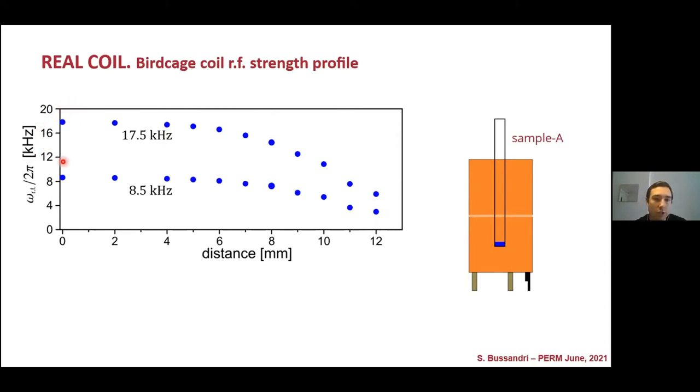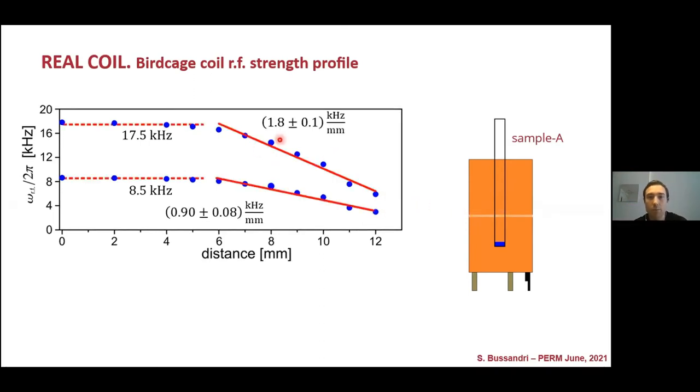So, we keep monitoring this RF strength profile of our bird cage coil until 12 mm from the center. We achieve a region that is homogeneous until 5 mm from the center of the coil, which is usually the space where our sample is occupied in a standard NMR experiment. And an inhomogeneous region where the RF intensity decays in approximately linear trend. We perform a linear fit, which is the slope,